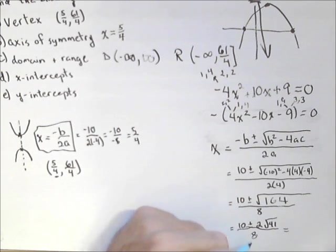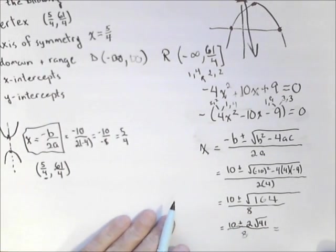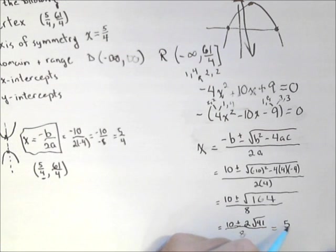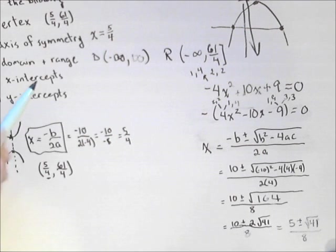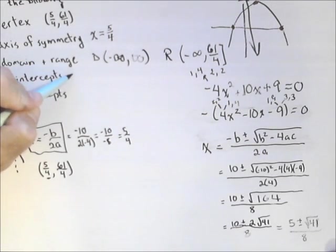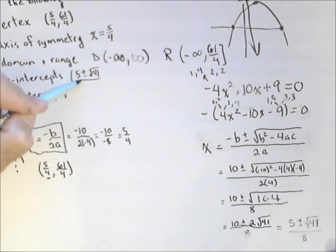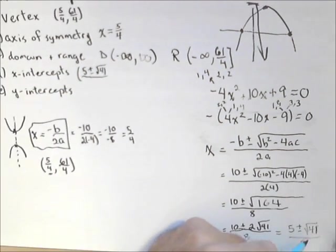Now we can divide the top and bottom by 2. Every term has to get divided by 2. So that's (5 ± √41)/4. And that's a nice simplified answer. So those are our two x-intercepts. The plus or minus accounts for both of them. The x-intercepts we'll write as (5 ± √41)/4.